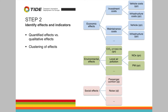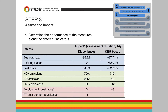In step two, you identify effects and indicators to measure these effects. As mentioned, we have effects that can be quantified and qualitative effects. Sometimes it's not just dependent on the characteristic of the effect, but also on data availability — because sometimes in principle you can measure something, but it needs a lot of effort to model it, so you might decide to include it as a qualitative effect. Here's an example — not a complete list — but one possible result is that you cluster the effects. For instance, noise effects could be treated as a qualitative criterion because the city may decide they do not have the time to model noise effects but still want to include it from a qualitative perspective.